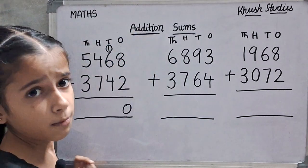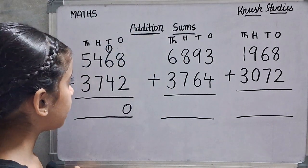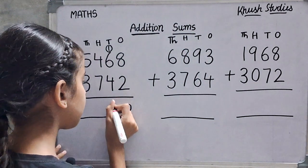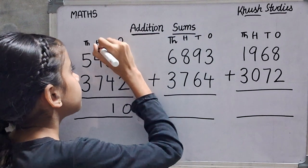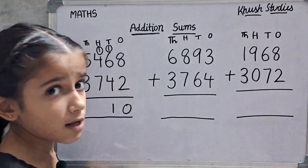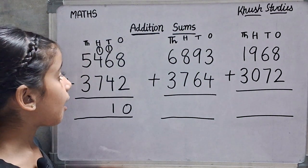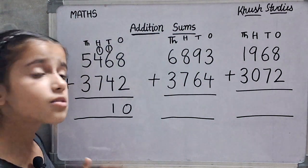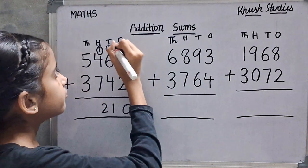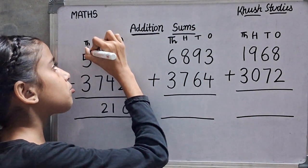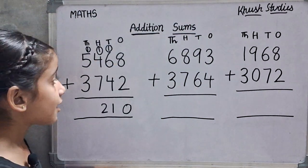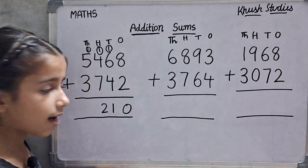1 plus 6 is 7, and 7 plus 4 is 11. We will write 1 here. 1 plus 4 is 5, and 5 plus 7 is 12. 1 plus 5 is 6, and 6 plus 3 is 9.